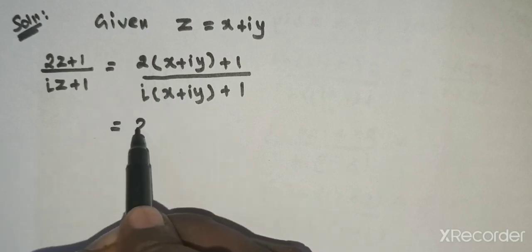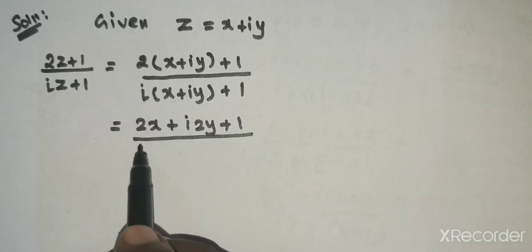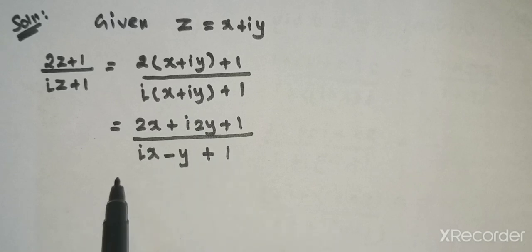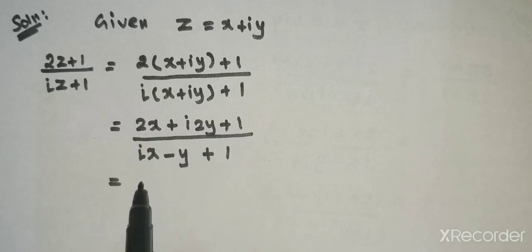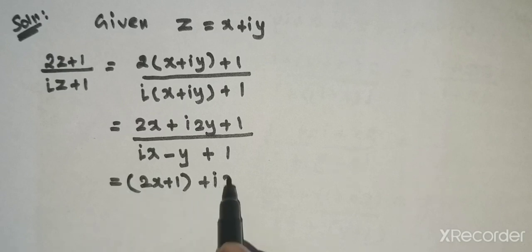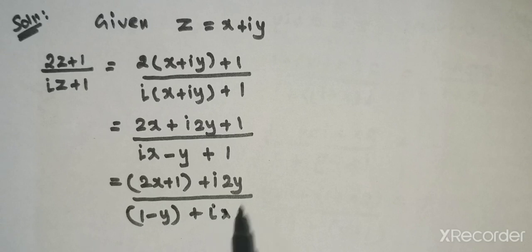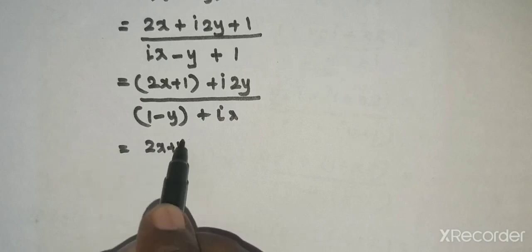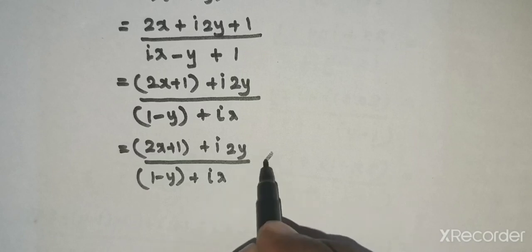Expanding the numerator gives 2x plus 1 plus i times 2y. The denominator i into x plus iy plus 1 simplifies to 1 minus y plus ix. We then multiply numerator and denominator by the conjugate of the denominator, which is 1 minus y minus ix.